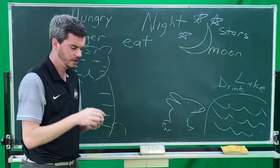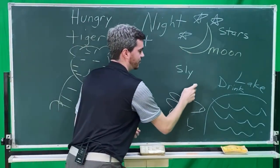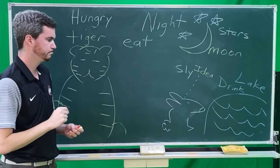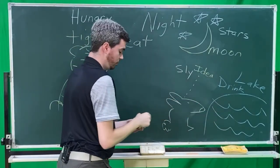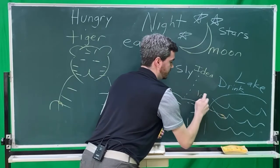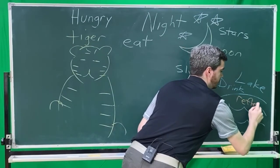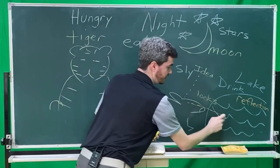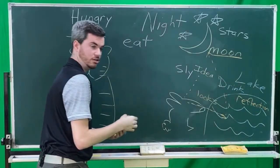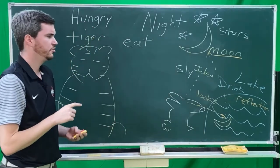The rabbit is very sly, very smart. So the rabbit gets an idea. An idea. The rabbit looks into the water. The rabbit looks with his eyes. Looks into the water. And the rabbit sees a reflection. The rabbit sees a reflection into the water. Sees a reflection of the moon. The reflection in the water looks like a moon.